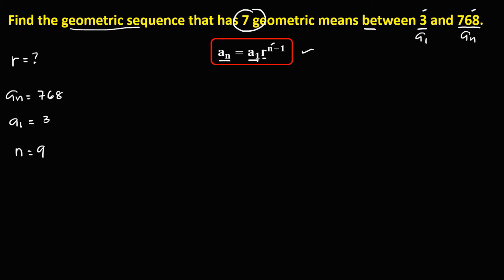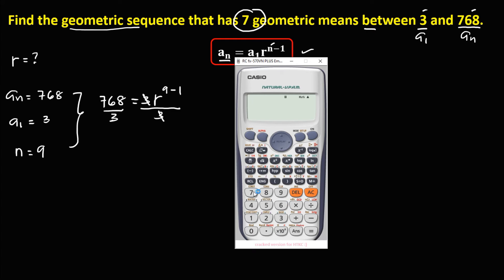To solve for the common ratio, using the formula, we have a sub n equals 768, then equals a sub 1 which is 3, times R to the power n minus 1. Since n is 9, that's R to the power 9 minus 1. Then simplify — divide both sides by 3, so 768 divided by 3 equals 256.